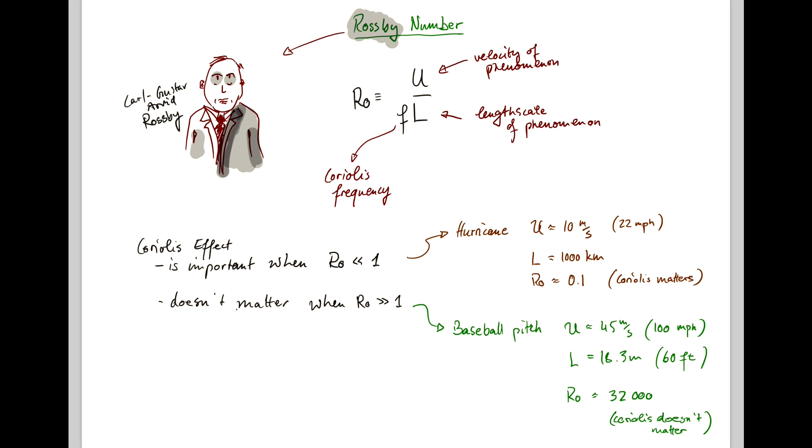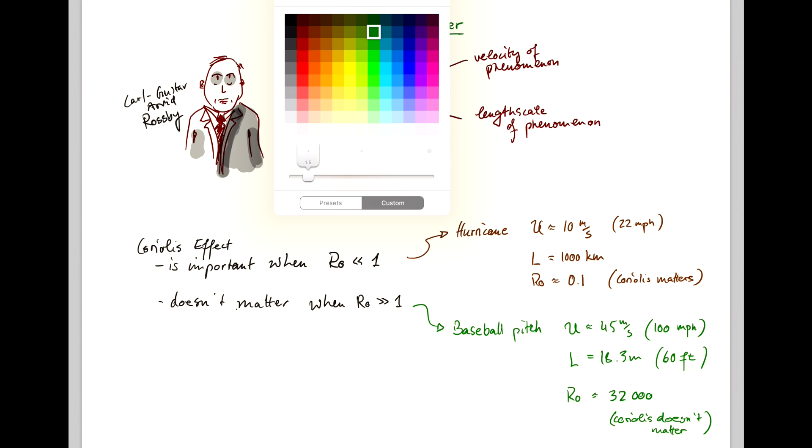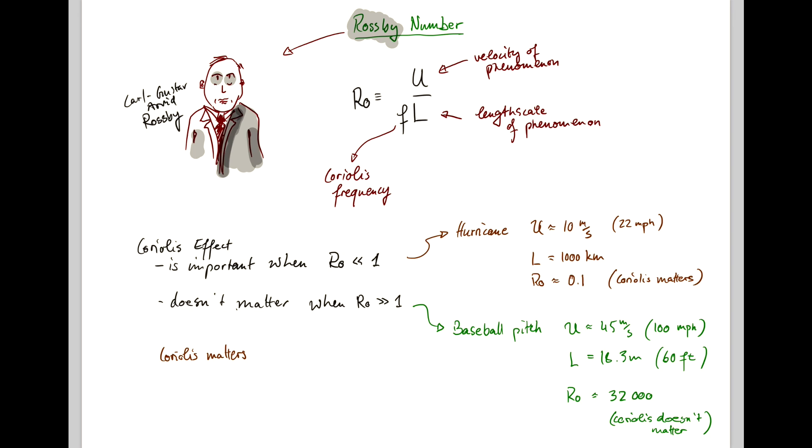So in summary, Coriolis is important the larger the length scale and the slower the object moves.